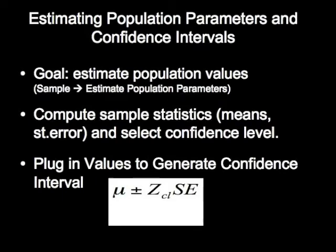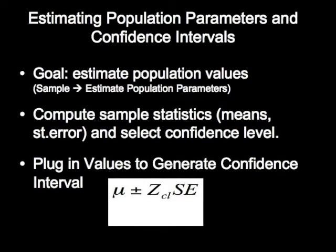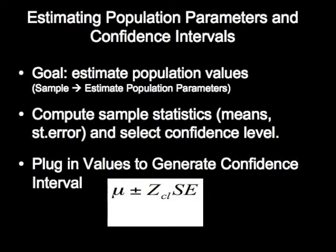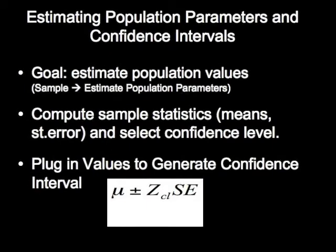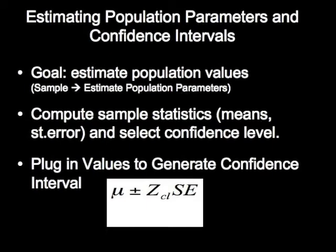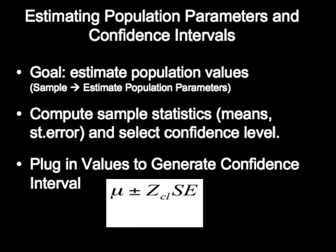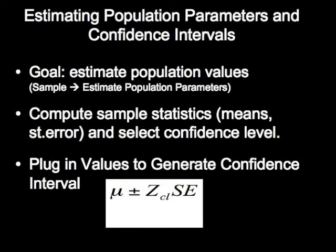So basically what we're going to be doing when we talk about confidence intervals is we're going to talk about how to estimate population values from a sample, how to compute those sample statistics, and then put a bracket around those sample statistics by plugging in values in a formula that says, on average,